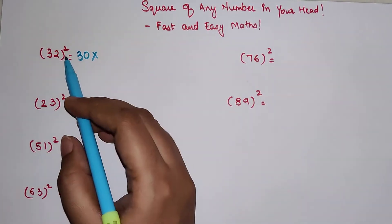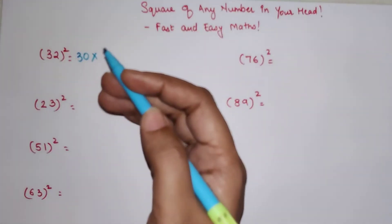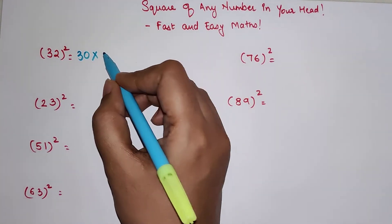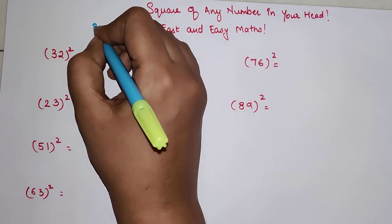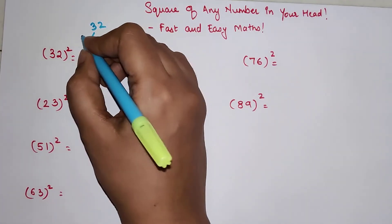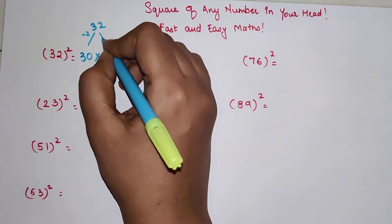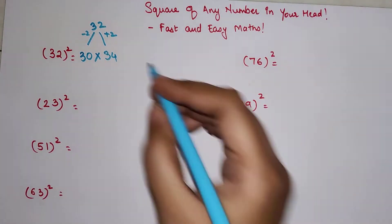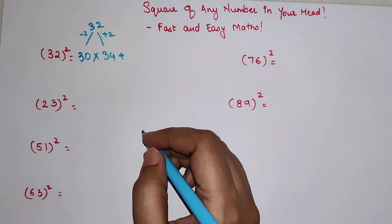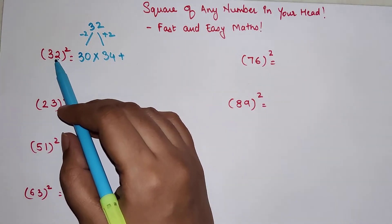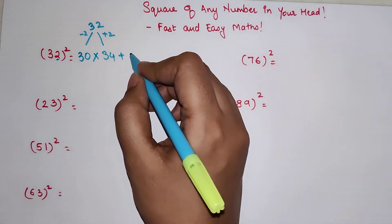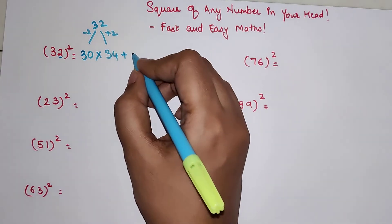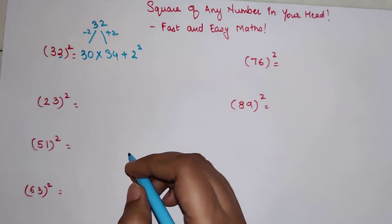So we're going to increase 32 by 2 to get the next number, so 32 plus 2 will get you 34. You've reduced 32 by 2, so you're going to add 2 over here. And then the last digit of your question will be 2 squared, so we're just going to add square of 2 over here.